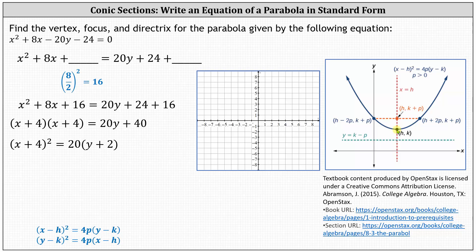So for the next step, let's go ahead and find the vertex, which is h comma k. Because we have x plus four, the x-coordinate is negative four. Because we have y plus two, the y-coordinate is negative two. The vertex is the point negative four comma negative two. Let's go ahead and plot this on the coordinate plane.